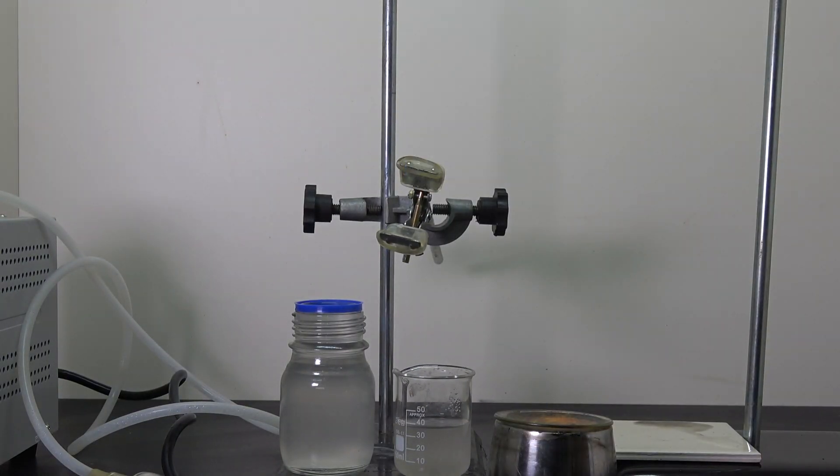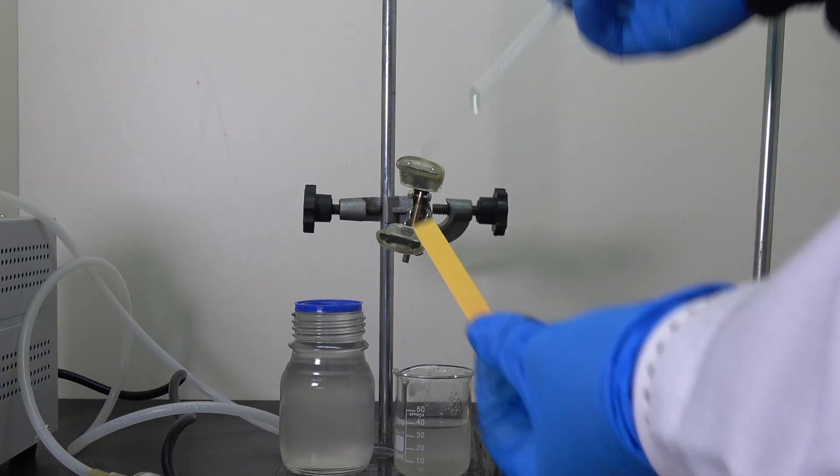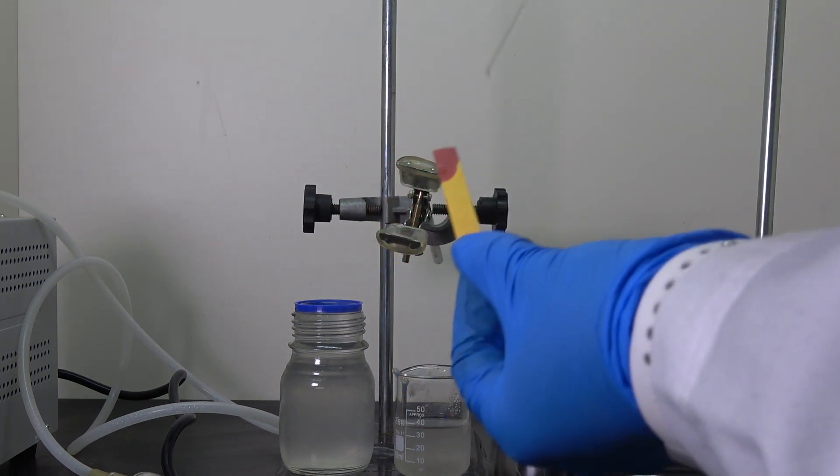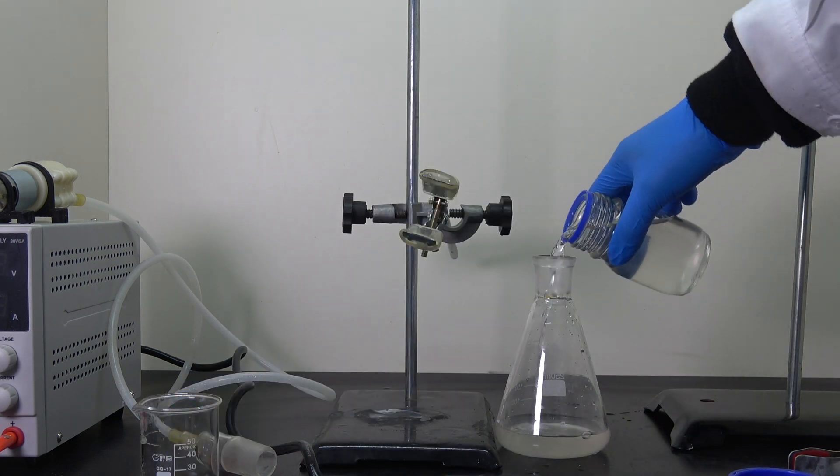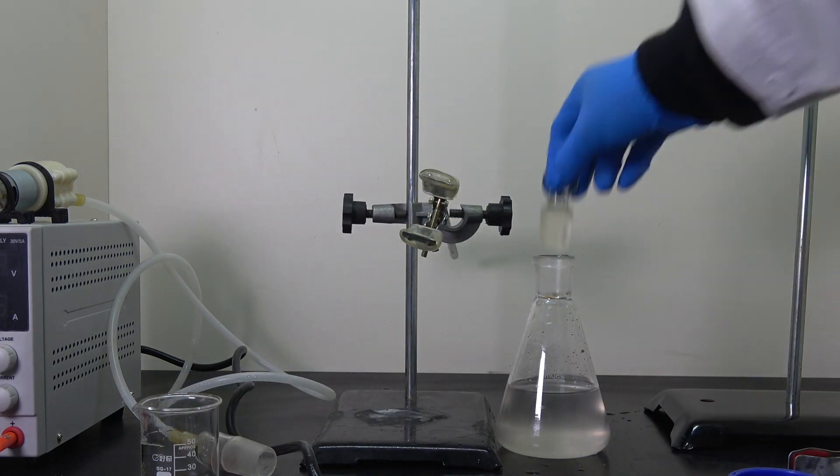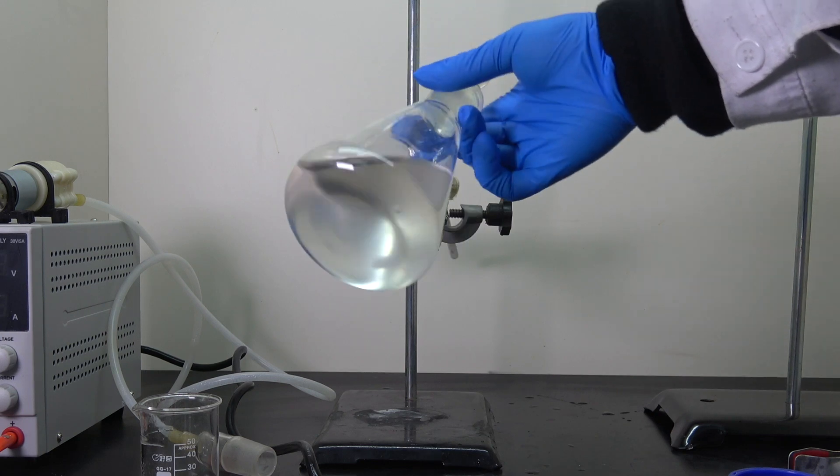Now to test it, I grab a pH paper, and the result shows the solution is strongly acidic. Despite there being a lot of hiccups and mistakes along the way, there we have it: phosphoric acid from elemental phosphorus.